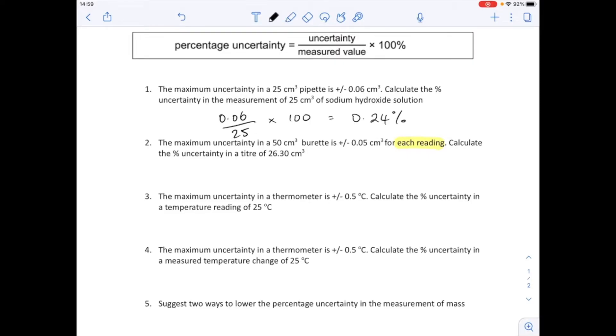So the way I would set it out is just like before: uncertainty, so 0.05 divided by what's been measured. 26.3 is being measured. Sometimes students put 50 there because they see a 50 in the information. That's what's been measured by the burette.